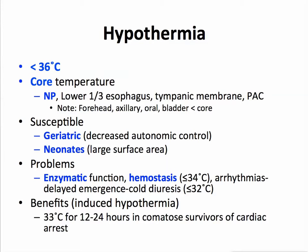The definition: less than 36 degrees centigrade. When we measure temperature, we can measure core temperature in the nasopharynx, in the lower one-third of the esophagus, the tympanic membrane — being careful not to puncture the tympanic membrane when you put in probes in the ear canal — and the pulmonary artery catheter with a thermistor on that pulmonary catheter. Note that temperatures from the forehead, the axillary, oral, and bladder read less than the core temperature. We really want to know core temperature and frequently use the nasopharynx.